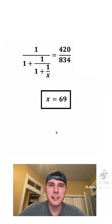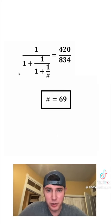Smush them together. Put a box around it. And we are done. In this rational equation, X is equal to 69. How exciting. Thank you.